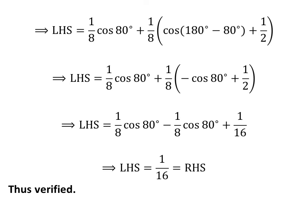Further simplification gives us left hand side equals 1 upon 16, which is equal to the right hand side of the identity. Thus we have verified the identity.